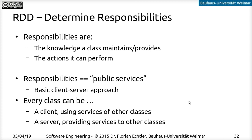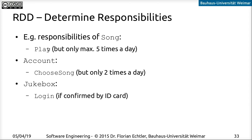Two classes can have both a client-server and server-client relation at the same time. Thinking about responsibilities already sets you on a very good track toward a first prototype. For example: a 'Song' could have the responsibility to play itself and track how many times it's been played that day; an 'Account' could be allowed to choose a song with the applicable limit; and a 'Jukebox' wrapper object could manage the login — if confirmed with the ID card it returns an Account, which in turn returns a Song that can then be played.